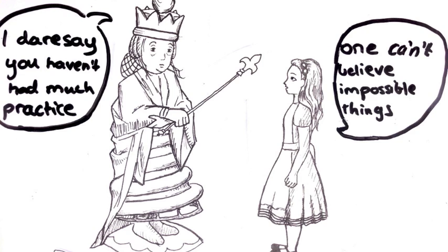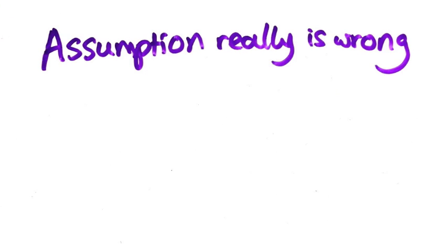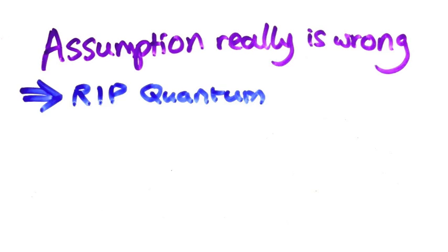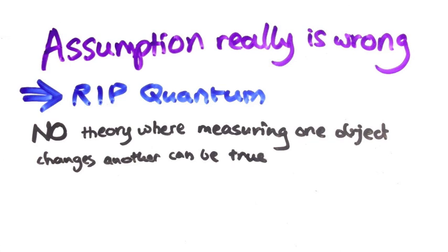The first possibility is that the assumption really is wrong. Well, that definitely rules out quantum mechanics, but it's actually even stronger than that. It says that no theory where measuring one object changes the other object can ever be true. But then how can we explain that A and B always have opposite colors?